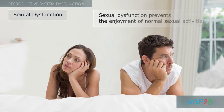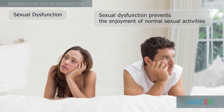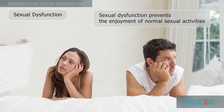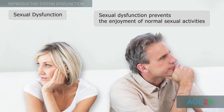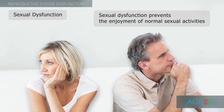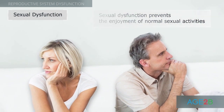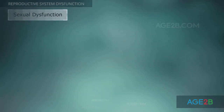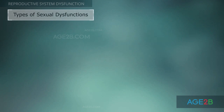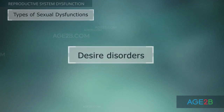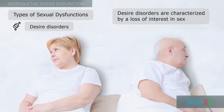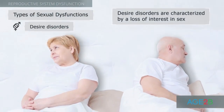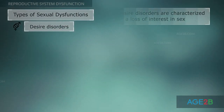Sexual dysfunction is a set of conditions that prevent an individual or a couple from enjoying normal sexual activities. Typical sexual dysfunctions are divided into four groups. Desire disorders are characterized by a lack of or decreased interest in sex.